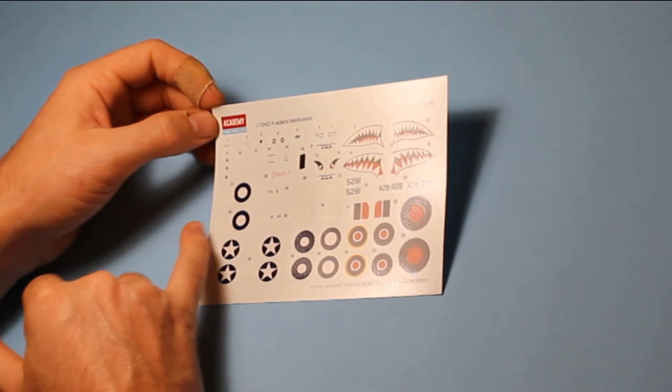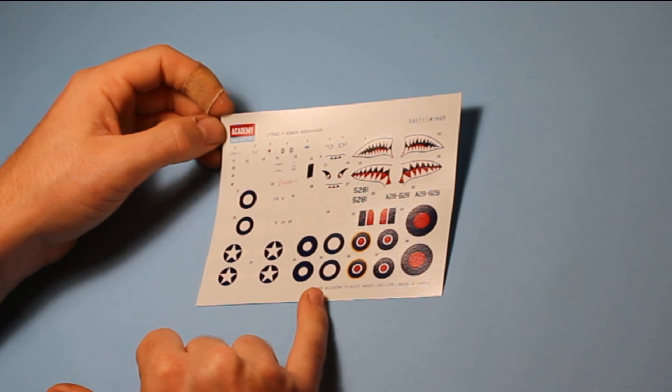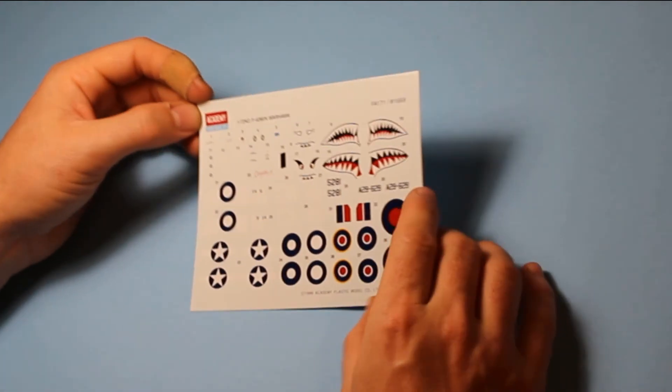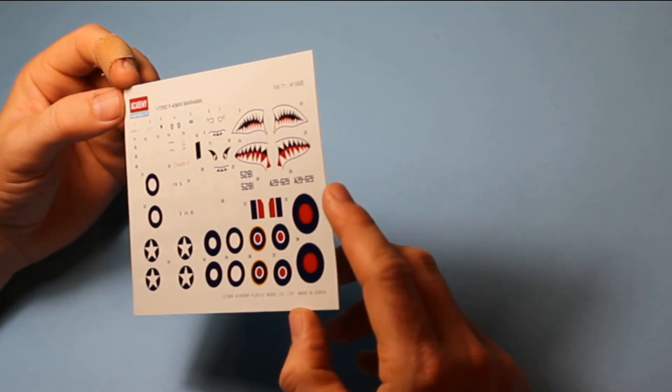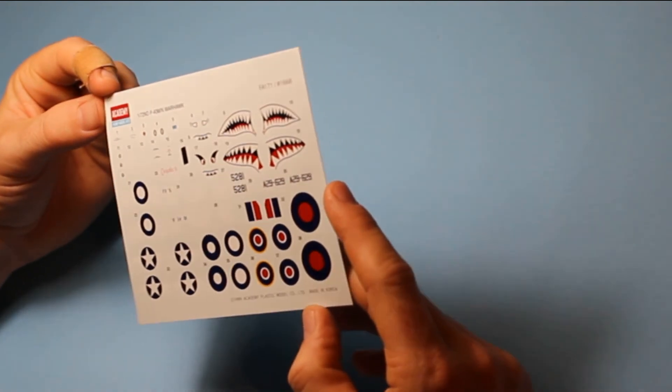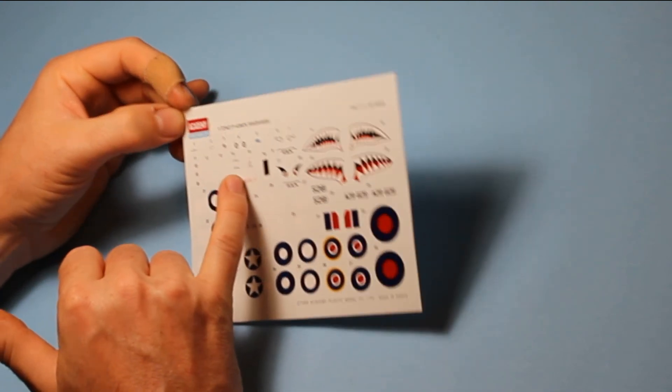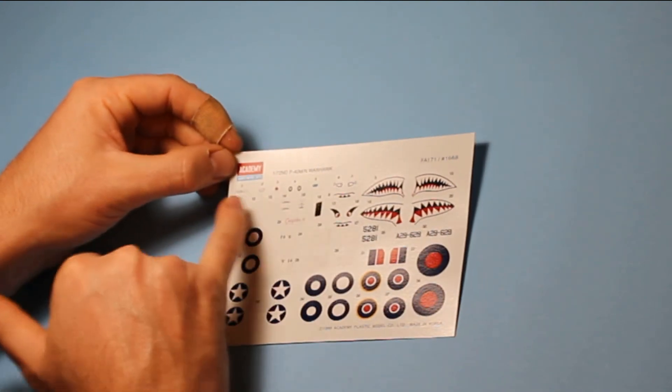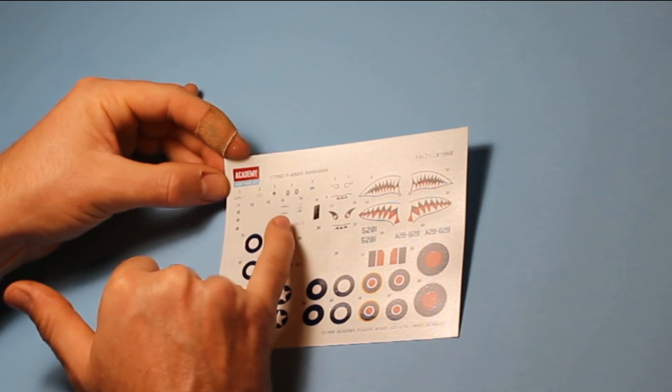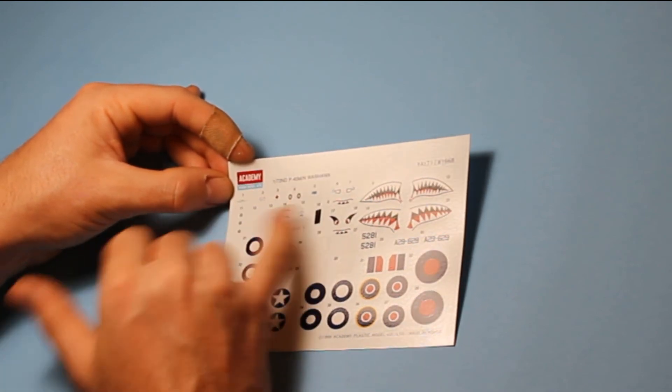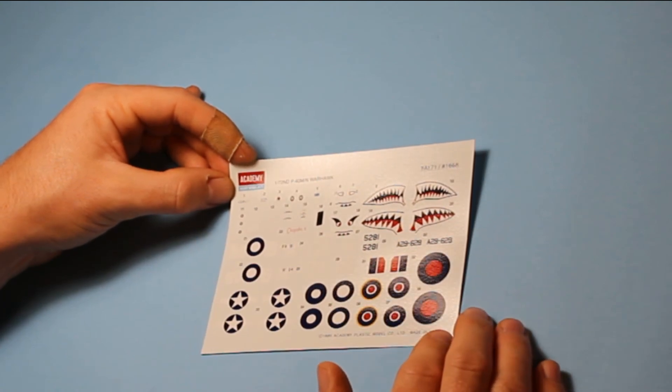It's quite nice to have the Australian Air Force included as well, which is a nice option that you don't tend to get. It's usually overlooked that theater of the war, so it's very nice to have that included. And we've got stencil data here. Most of this is just sort of squiggles. It's not actual words, you can't read it. But I'm not sure you'd be able to at this scale anyway, so that's probably more in scale than if you could read it.